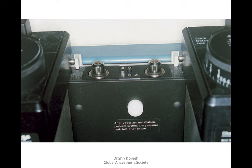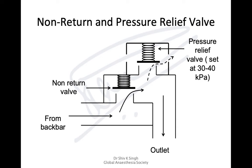Next is the back bar, where you find the vaporizers and vaporizer seating. The O-rings on the seating are important as they can lead to leaks during machine testing and need to be checked. On the back bar there are also non-return valves and a pressure relief valve. If back-bar pressure increases, the non-return valve shuts off to prevent damage or backflow into the vaporizer. If the common gas outlet is blocked, the pressure relief valve releases gas — set at around 30–40 kPa.